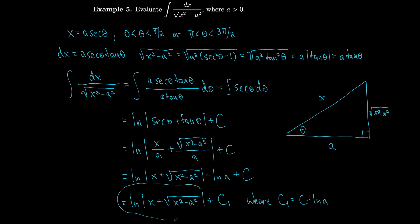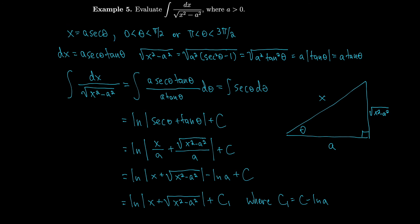This result should look familiar — it's reminiscent of hyperbolic trig functions. We could have used a hyperbolic substitution x equals a cosh t, using the identity cosh²t − sinh²t equals 1. But since trig substitutions are much more familiar, we'll generally use those and leave hyperbolic substitutions for those who love hyperbolic functions.